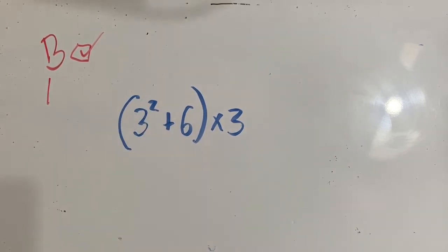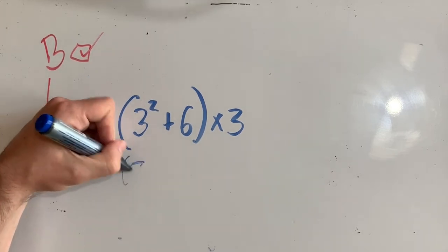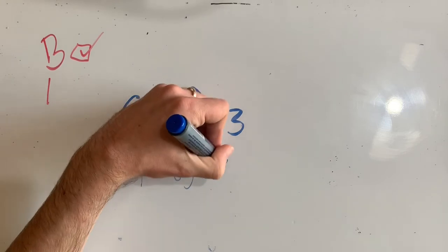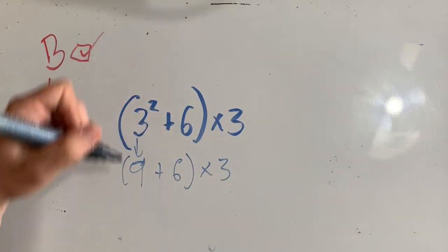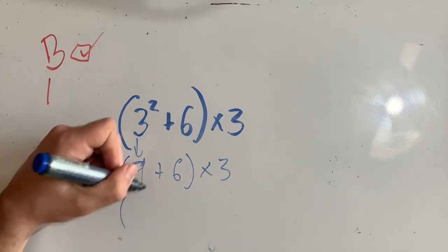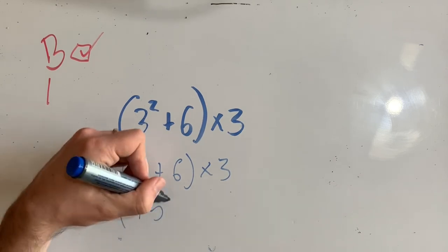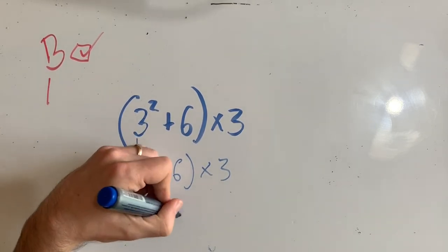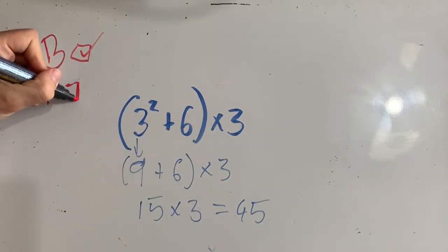So I'm going to rewrite this as 9, because that becomes 9 plus 6 times 3. I haven't changed anything else yet. I've just worked out what this value is. And then I'm going to go down to the next one. I'm going to work out what 9 plus 6 is. 9 plus 6 is 15. And actually, I don't need the brackets anymore, do I? Times 3 is 45. And that is indices.